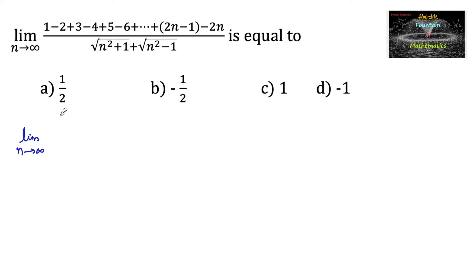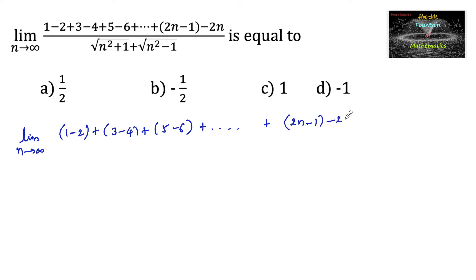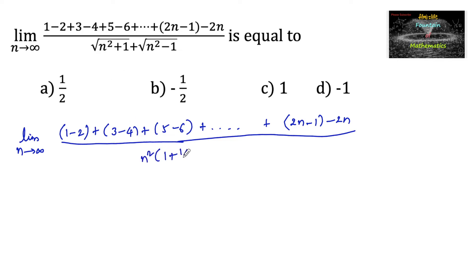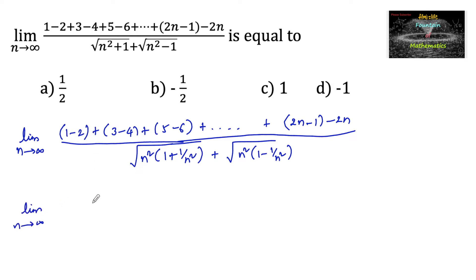We can write the numerator by grouping two consecutive terms: (1 minus 2), (3 minus 4), (5 minus 6), and so on up to (2n minus 1) minus 2n. Each pair gives negative 1: 1 minus 2 is negative 1, 3 minus 4 is negative 1, 5 minus 6 is negative 1, and so on. We then take n squared common from the denominator: root of n squared times (1 plus 1 upon n squared) plus root of n squared times (1 minus 1 upon n squared).